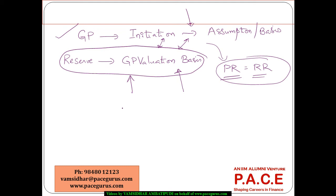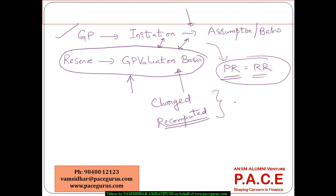The Gross Premium we are using is directly the Charged Gross Premium — it is not recomputed based on the Reserving Basis. That's an important point. We are not recomputing the Gross Premium based on the Reserving Basis, unlike in Net Premium where we recomputed the Net Premium based on the Reserving Basis. Here we look only at the Gross Premium that is being charged.